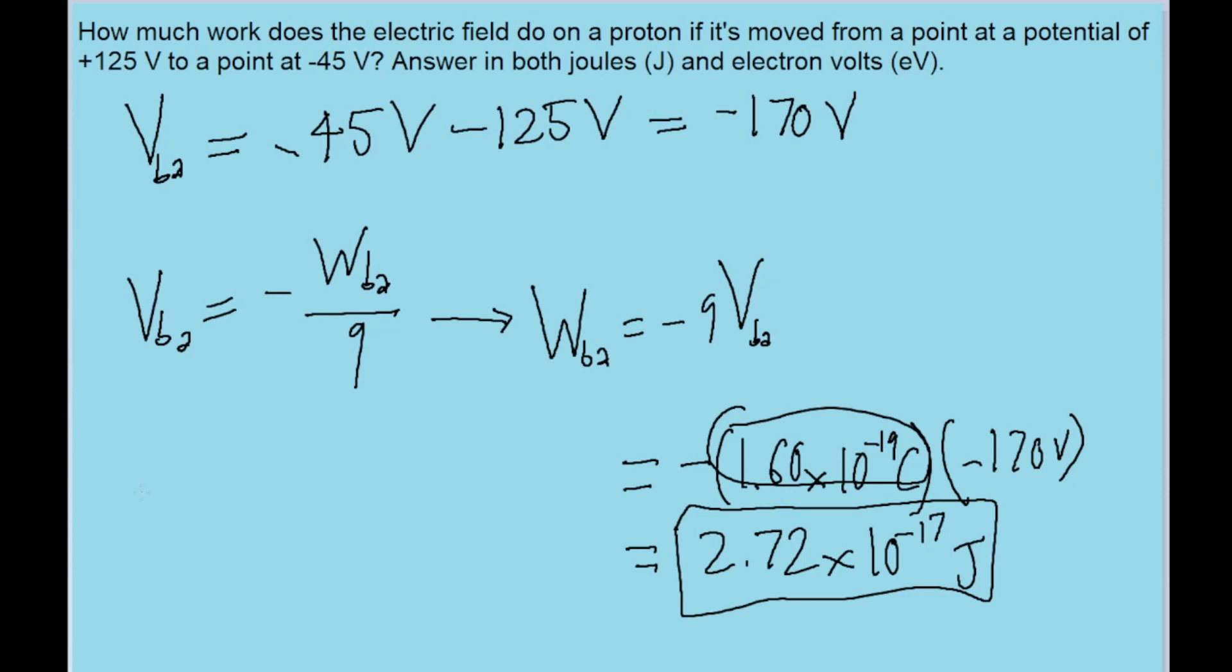So it's the exact same formula, except instead of using 1.60 times 10 to the negative 19 coulombs for charge, we're just going to use very simply 1E because that is the charge of a proton in terms of E, the elementary charge, which has the same value in coulombs of 1.60 times 10 to the negative 19. They're equal charges.